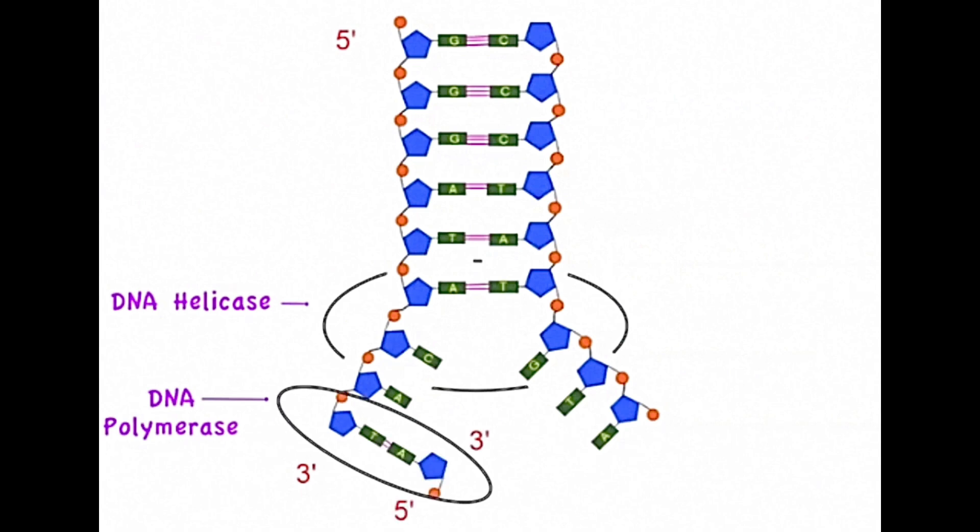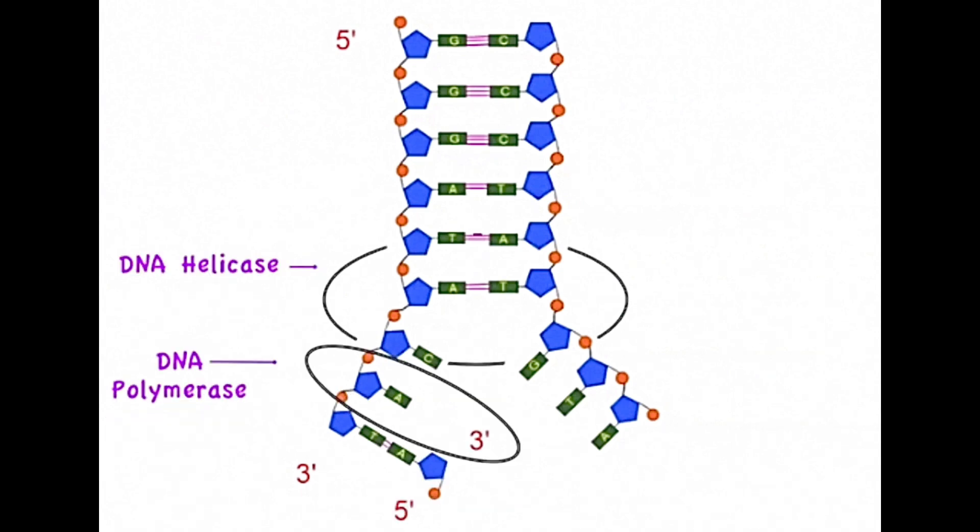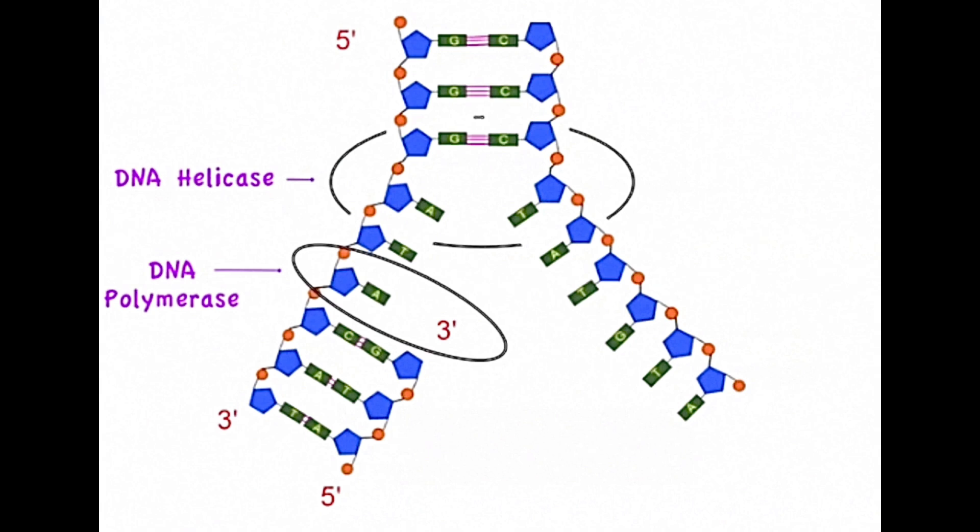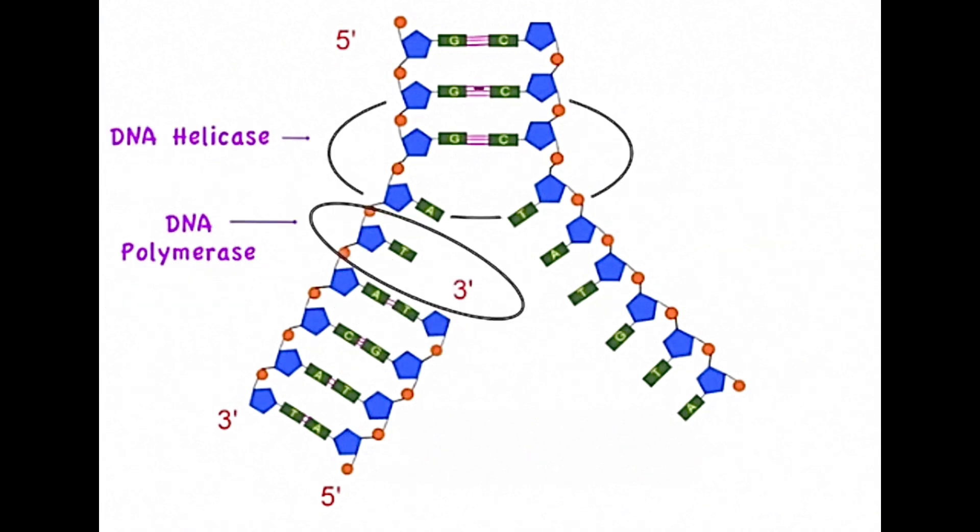Next the enzyme DNA polymerase adds complementary DNA nucleotides. Notice that the newly synthesized strand complementary to the original strand is anti-parallel. DNA polymerase is only able to add a nucleotide onto the 3' end of the previous nucleotide.